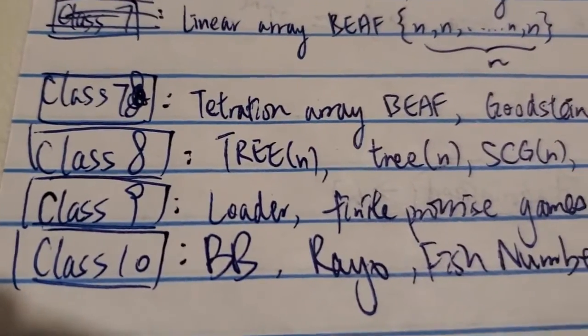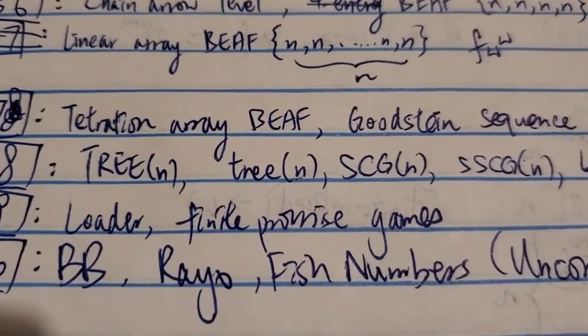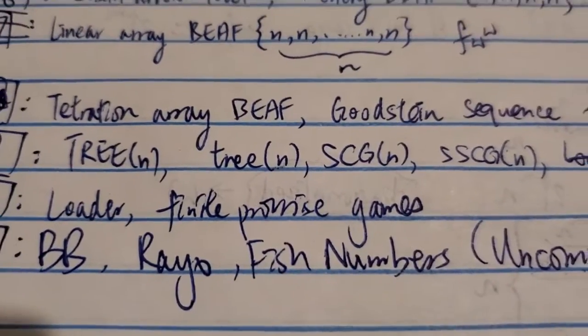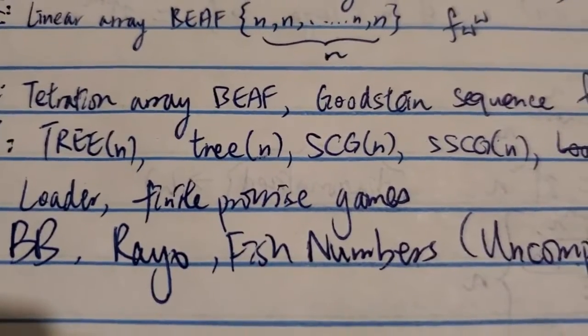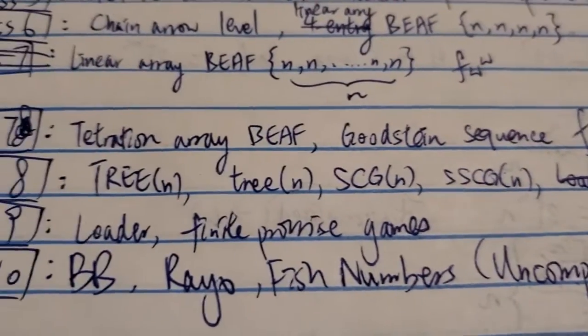Next is class 9. This includes the loader's number and also maybe the finite promise game. This is a function, but the numbers generated by this game is in this class 9 level. They're also called the higher computable level.